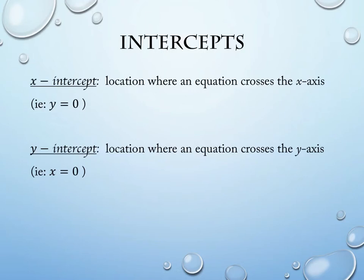Some very important features of graphs are their intercepts. We have two types: an x-intercept and a y-intercept. Your x-intercept is the location where an equation crosses the x-axis, and at that crossing y = 0. There is a typo on your paper — it should say 'y = 0,' not 'y equals a number.' Make sure to correct that. And a y-intercept is the location where an equation crosses the y-axis, which happens at x = 0.